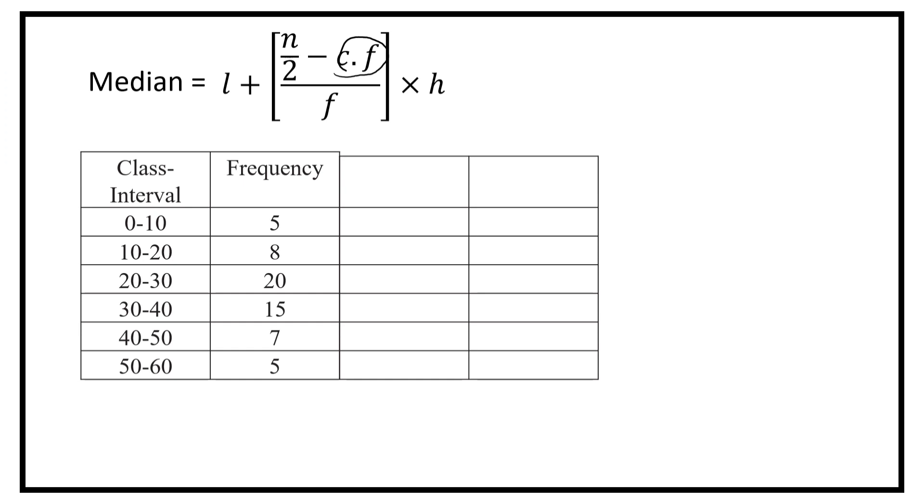So, let us add two more columns. 5 is the cumulative frequency of the 0 to 10 group. 5 plus 8, that is 13.